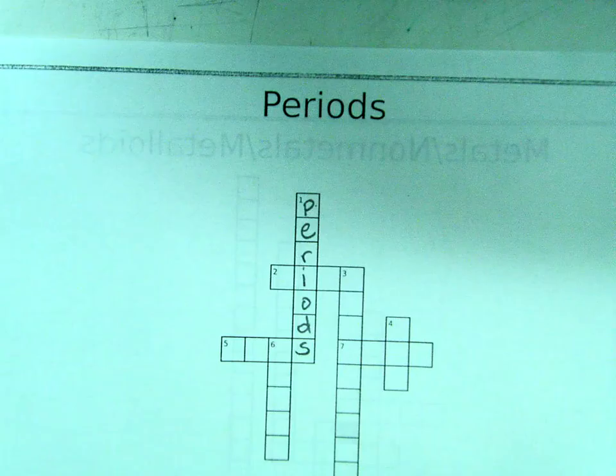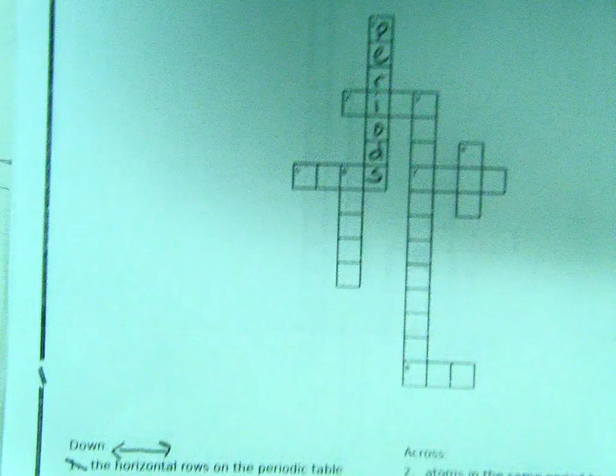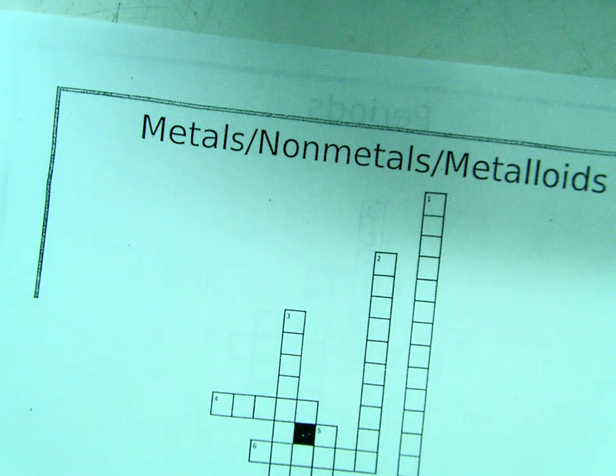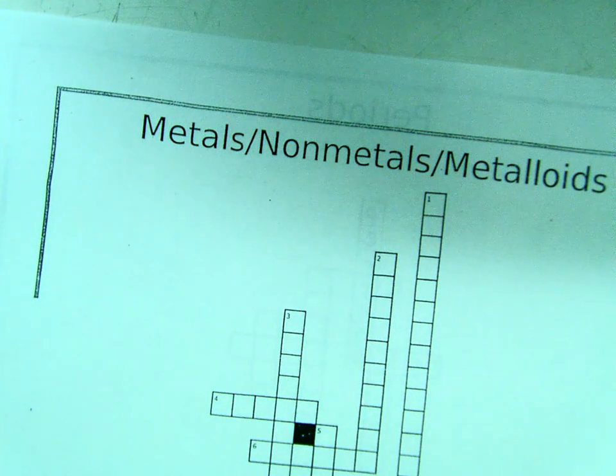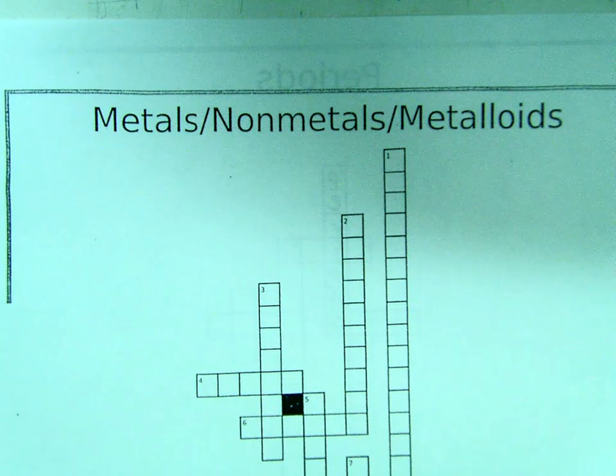I'm going to fill that in, and then you'll come back and you'll mark off that you've done it. I know y'all know how to do crosswords, so I shouldn't have spent too much time here. On the back of periods, we have metals, non-metals, and metalloids. This is coming from our notes from Monday or Tuesday.